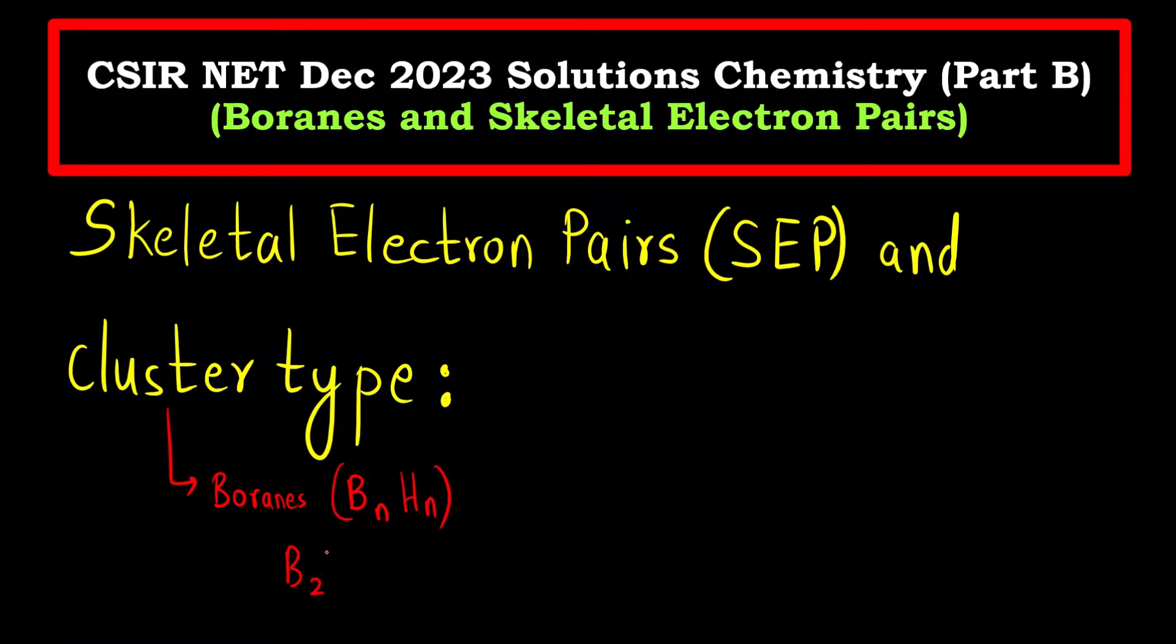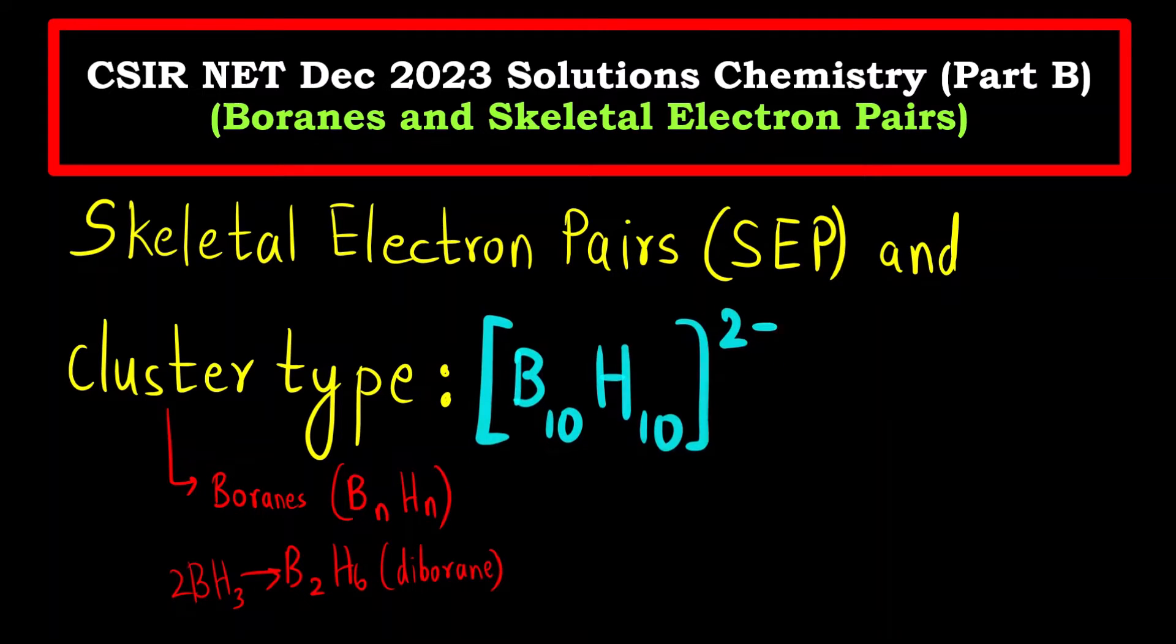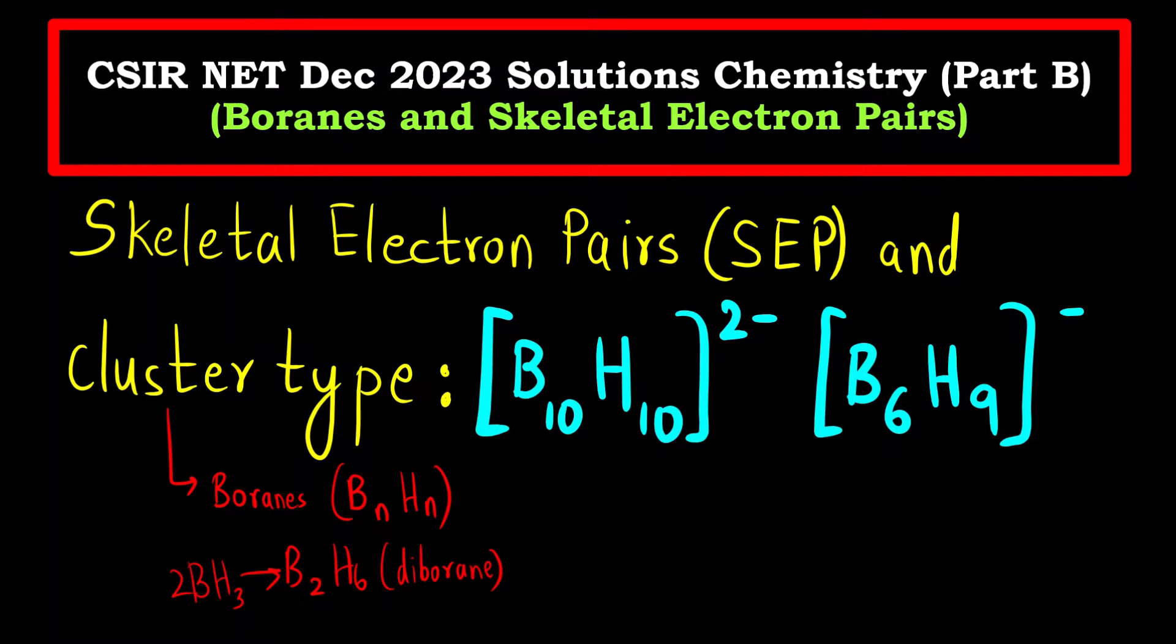What is boranes? Compounds containing boron and hydrogen. For example, the most common borane that we are familiar with is dimer of BH3. Two molecules of BH3 combine to form B2H6, called diborane. It's famous for its banana bonds or three center two electron bonds. Here also there is boron and hydrogen.